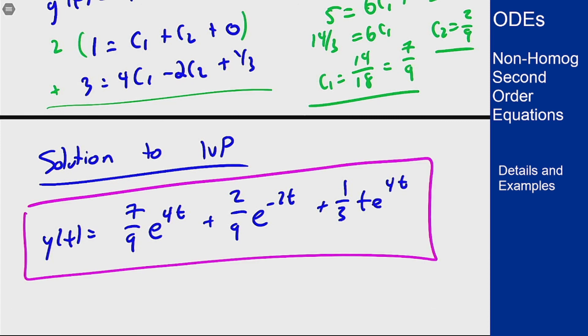That's how you set up and solve these initial value problems, including the different tweaks you'll need to make when certain things don't work out perfectly for the method of undetermined coefficients.